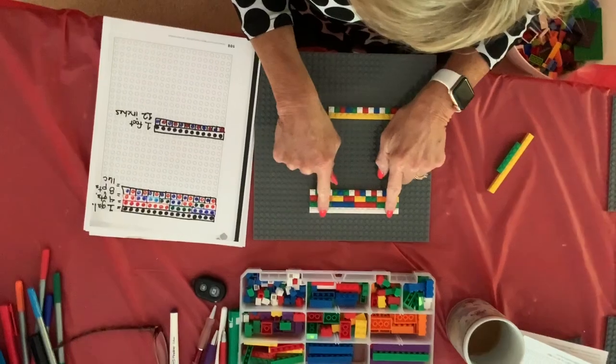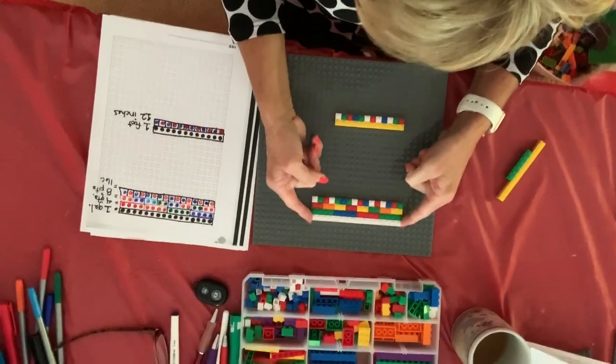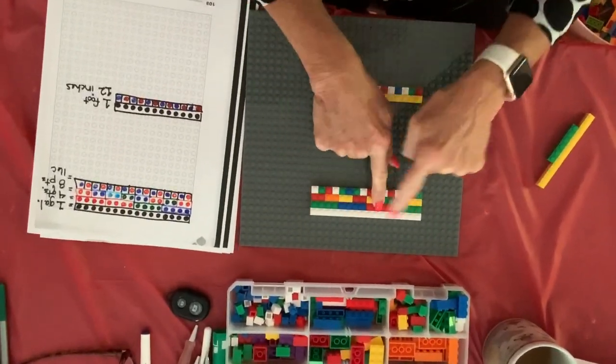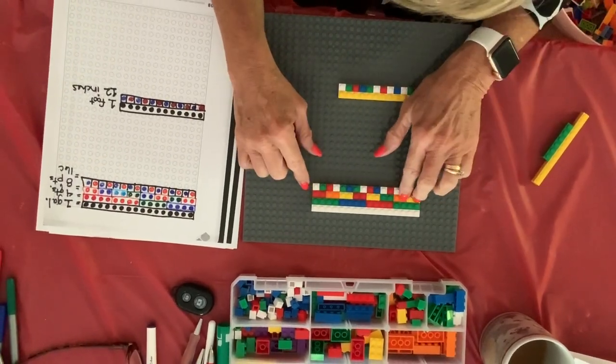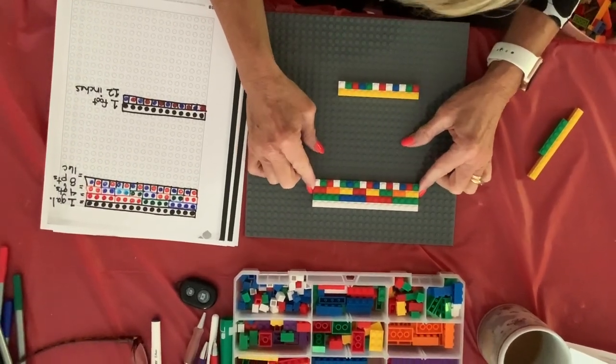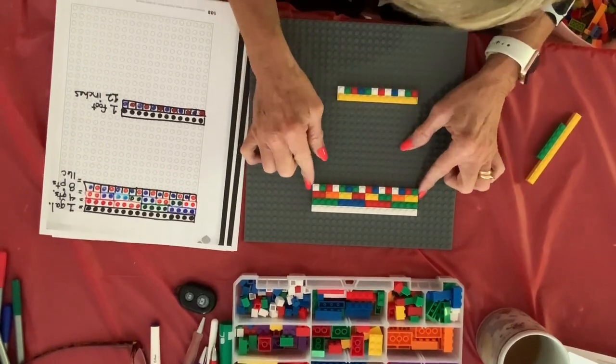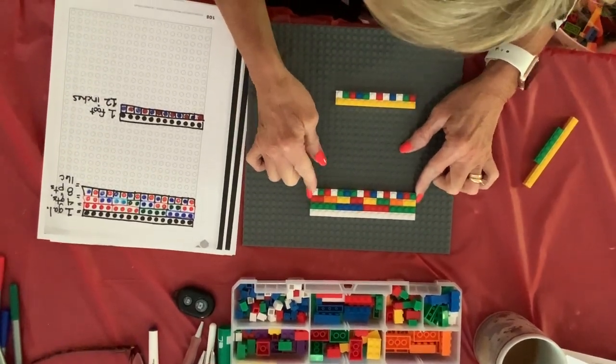In this first model, a 16-stud brick represents one gallon. If you divide that into equal sets, you can see that there are four quarts in a gallon, two pints in each quart or eight pints in a gallon, and 16 one-ounce servings or 16 cups in a gallon.